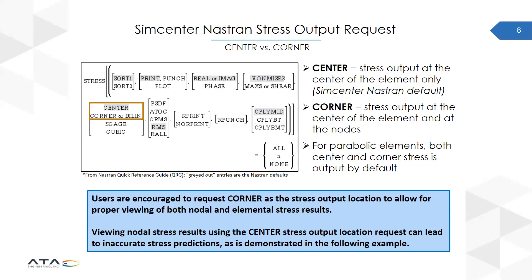In SimCenter Nastran on the stress output request card, you have the option of choosing either center or corner stress output. Center stress output is the SimCenter Nastran default, and that will output stress at the center of the element only. Whereas corner stress output will output stress at the center of the element and at the nodes — so Nastran goes ahead and computes that extrapolated nodal stress for you and makes it available.